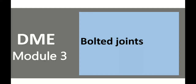We are going to discuss the third module. In the third module, we already studied the threaded joints design. We are going to study the problems of the design procedure and discuss the classifications of nomenclature. In this video, we will discuss the next topic called bolted joints.